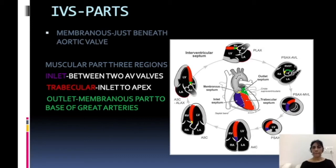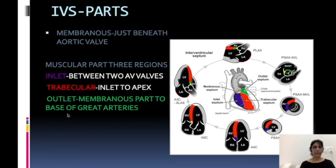So there are three parts of the muscular septum: inlet, which is between the two AV valves; trabecular, which runs from the apex up to the inlet part; and outlet, which is the part near where the great arteries originate — right near the semilunar valves.